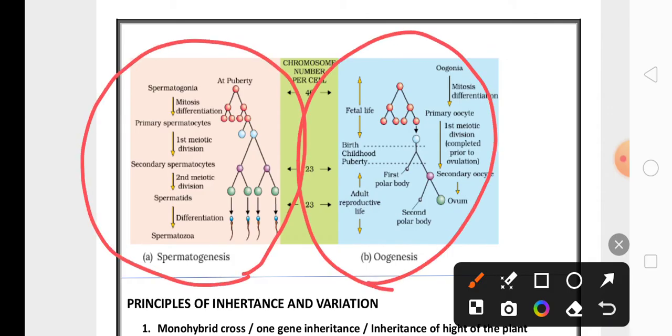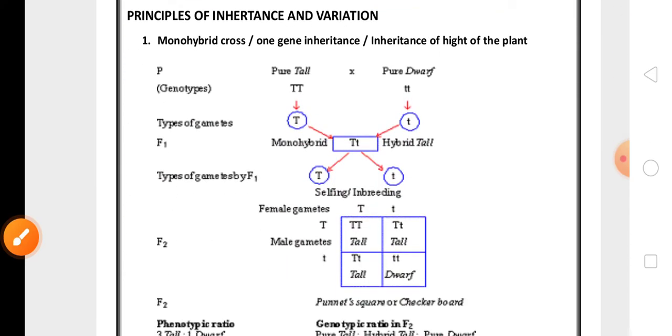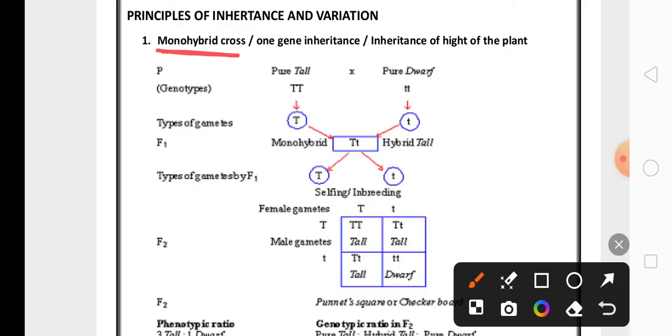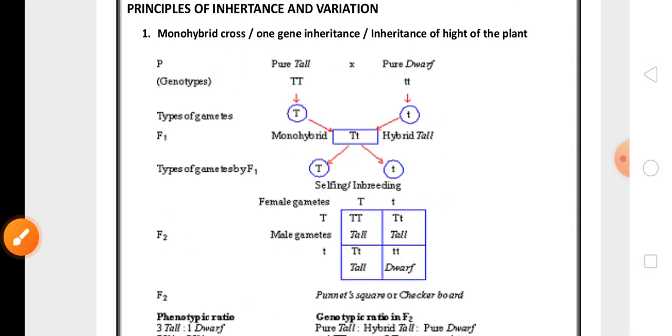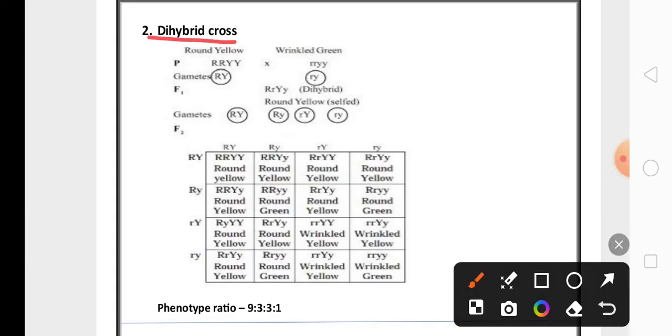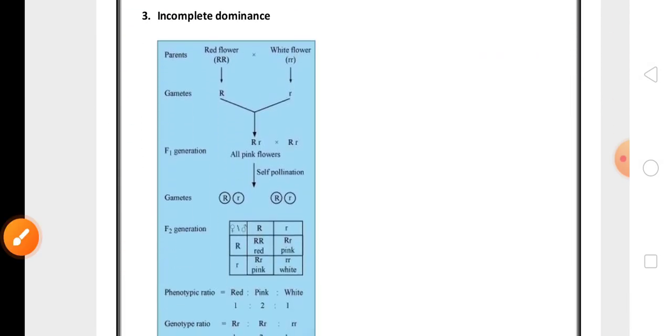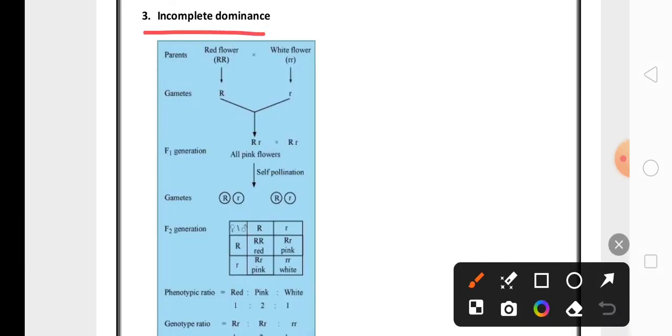Then in chapter principles of inheritance and variation, one of the five marks important question is monohybrid cross or one gene inheritance or inheritance of height of the plant. So this is the flowchart of monohybrid cross. Then as you know, dihybrid cross, inheritance of two genes, or the law of independent assortment is also one of the most important five marks questions. Another five marks important question is incomplete dominance, also called as the inheritance of flower color in snapdragon, is also very important.